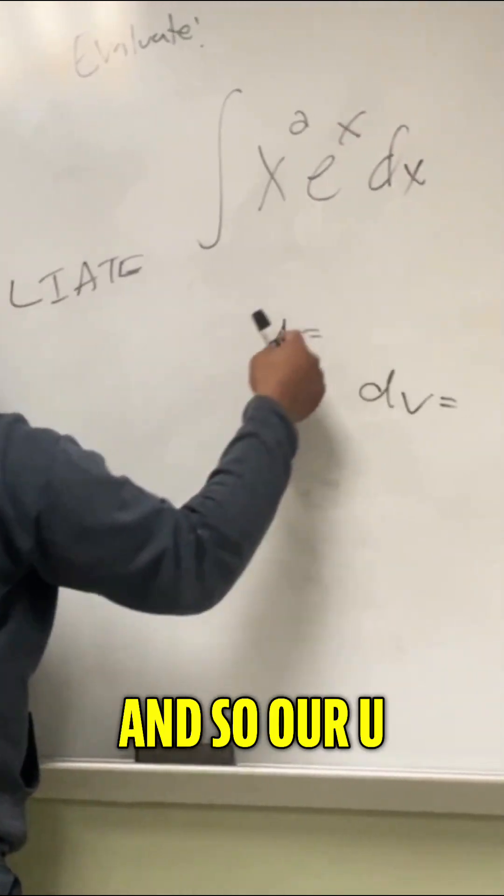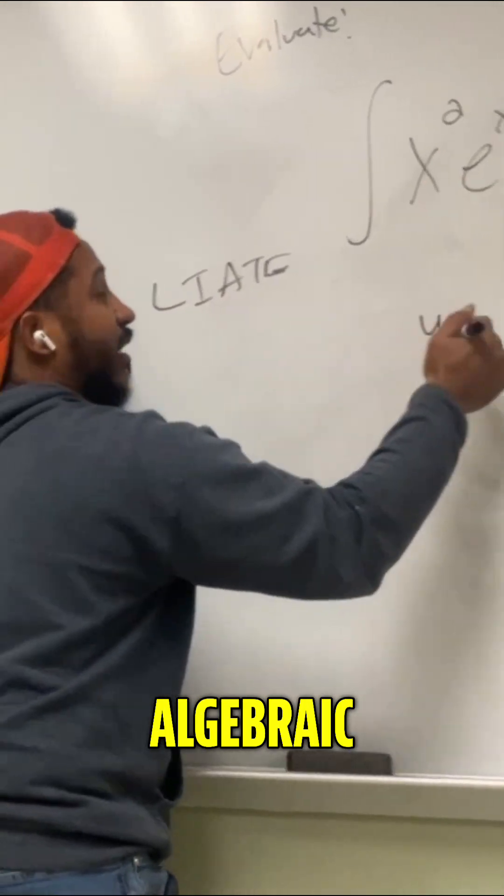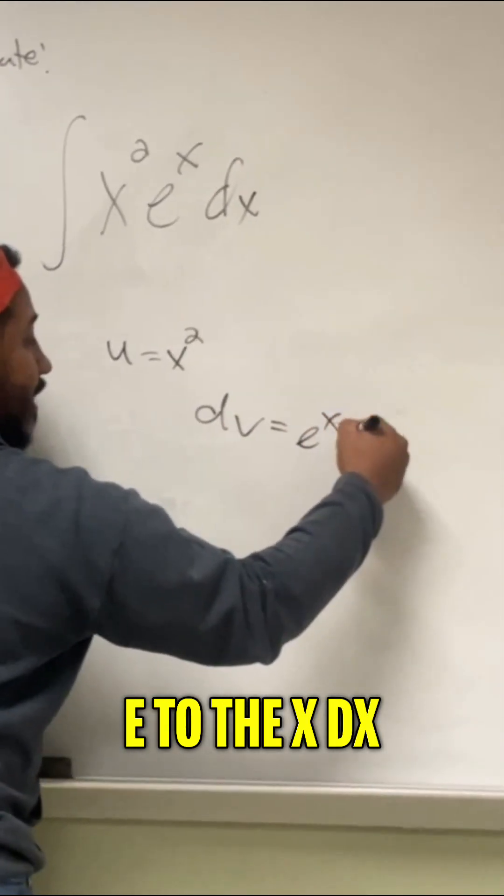So here we have an algebraic and an exponential, and so our u, we would say, would be the algebraic, in other words x squared, and dv would be e to the x dx.